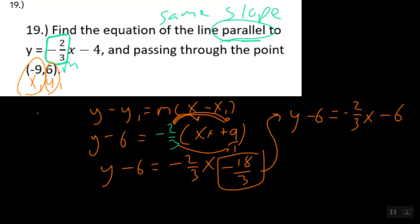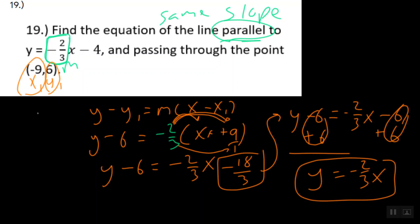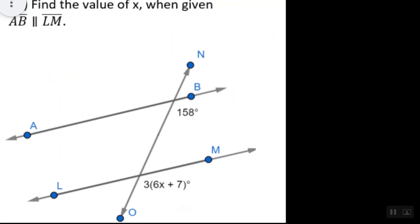Now from here guys, all we have to do, get y by itself, is add six to both sides. And it turns out we get y is equal to negative two over three x. And that's just it. All right. Because those apparently cancel out. All right. Thank you guys, and I'll see you all in our next problem.